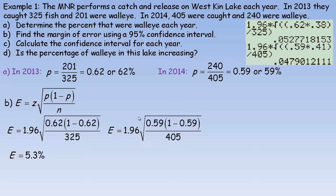And for 2014, the p is 0.59 and there are 405 fish caught, so n is 405. Of course we use the same confidence interval of 95%. And so we get a margin of error of 4.8%.